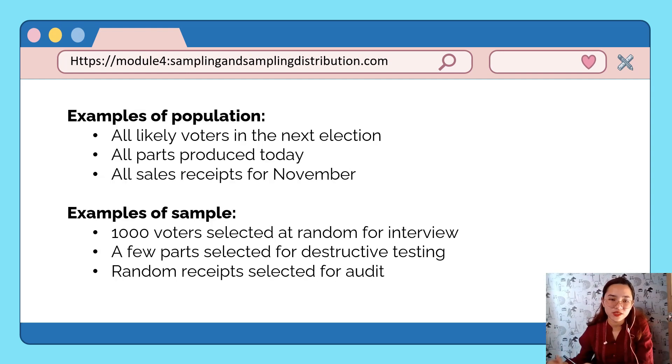Let's take a look at examples of population. First, all likely voters in the next election - that is our population. When we get a portion from this population, that's called a sample. For example, 100 voters selected at random for an interview.